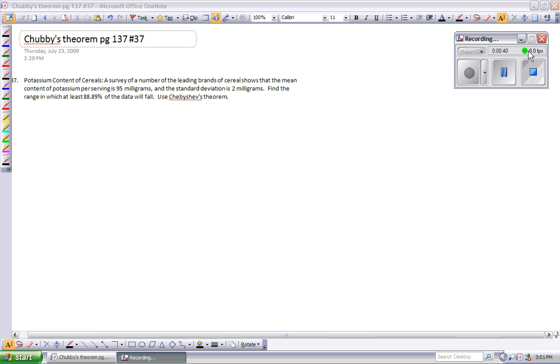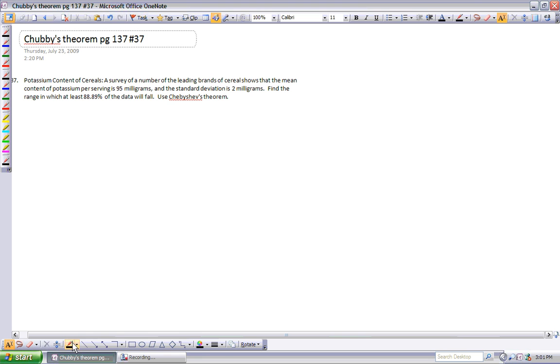So, this is actually a very straightforward problem if you know how to use algebra. Here's what we know. Chubby's Theorem says that the proportion of data that will be within k standard deviations of the mean is 1 minus 1 over k squared. And of course, that will give you a decimal, so you would multiply it by 100 to make it into a percent.